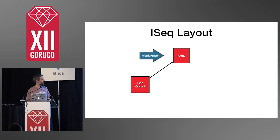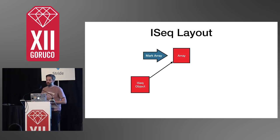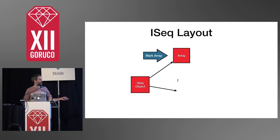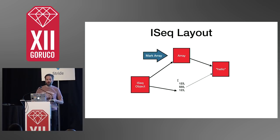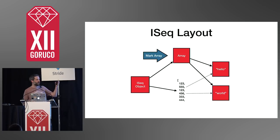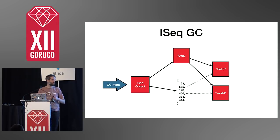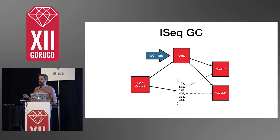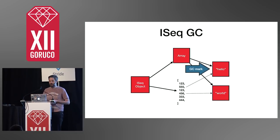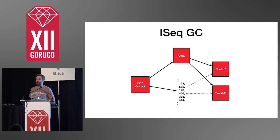How did the VM deal with this? The way the original VM author chose was to introduce something called a mark array. The instruction sequence points at this array — truly a Ruby array — and as the program is compiled, when we come across string literals, we add a pointer to them from the instructions and also push them onto the array. As we compile, we get more string literals, and now we have an array that has a reference to these strings, and also the bytecode has a reference. When the GC marks this, it marks the instruction sequence object, which says 'I need you to mark this array.' The array says 'I have some strings internally that you need to mark too,' and now those strings will stay alive.